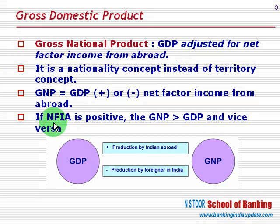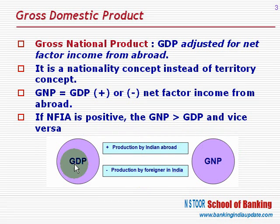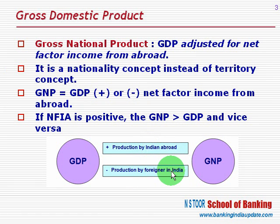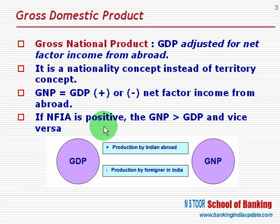If net factor income from abroad is positive — meaning production by Indians abroad is greater than production by foreigners in India — then GNP will be greater than GDP. On the other hand, if production by Indians abroad is less than production by foreigners in India, then GNP will be smaller than GDP. So when net factor income from abroad is positive, GNP is larger; when it is negative, GDP is larger.